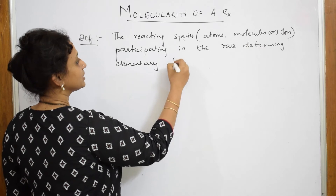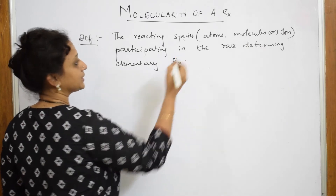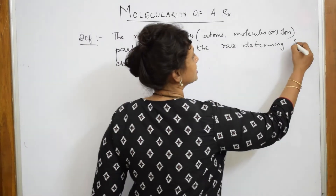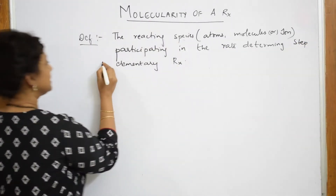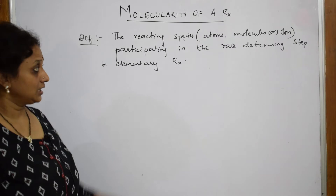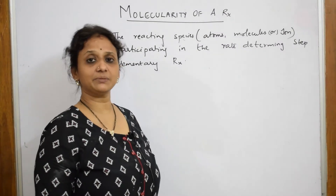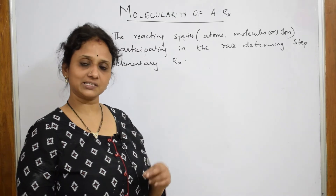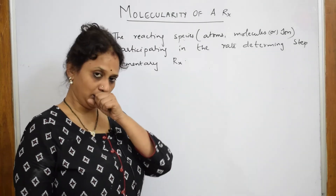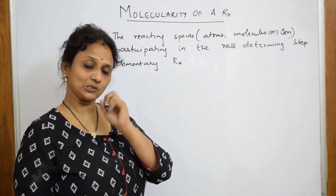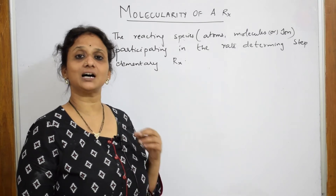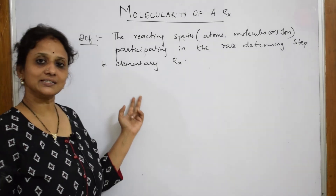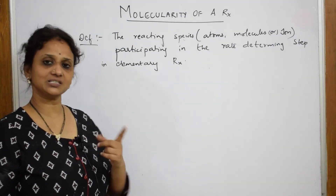The rate determining step — also called the rate determining elementary reaction — is the slowest step of the particular reaction. That slowest step determines the rate, because it is the slowest step in the whole reaction — the RDS of that particular system. An elementary reaction is a reaction which occurs in one step.